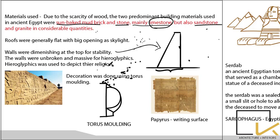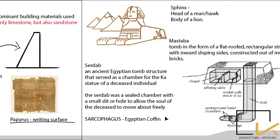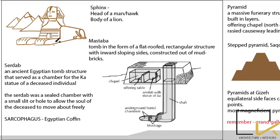Walls were unbroken and massive, used for hieroglyphics — the carvings seen on Egyptian walls, pylons, etc. Decoration was mainly done using torus molding, a specific kind of molding. Egyptians used to write on a surface known as papyrus.